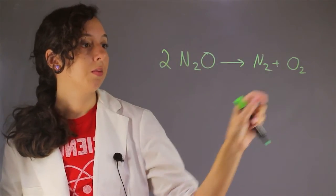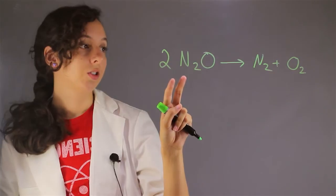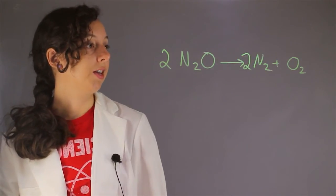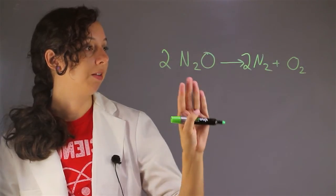We have two oxygens, two oxygens, but now we have four nitrogens. So, we have to add another coefficient of two to our nitrogen gas, and this is going to pretty much balance everything out.